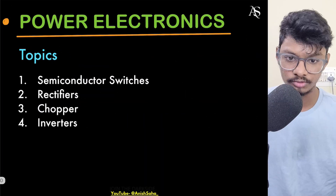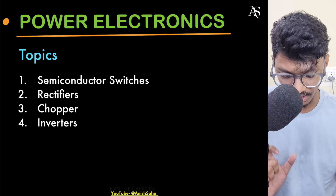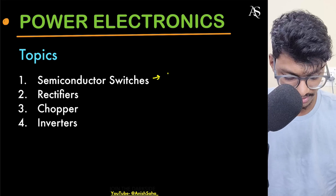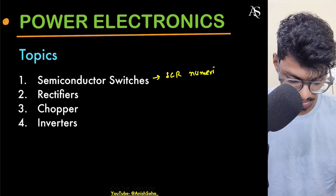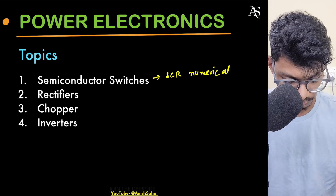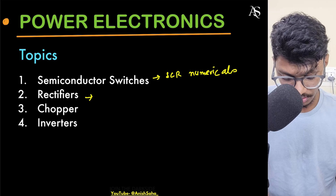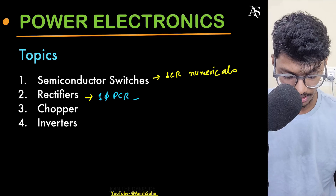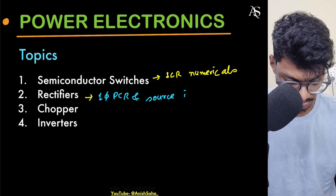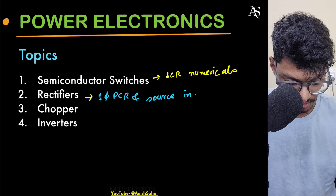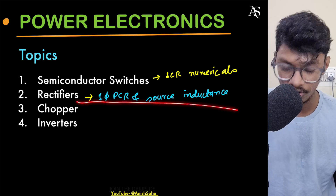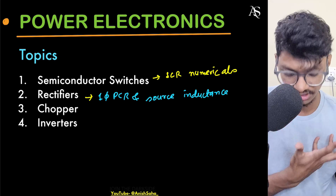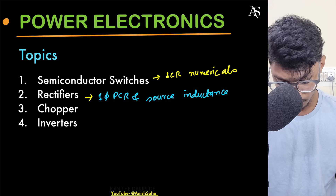Next is Power Electronics — again, everything is important. From semiconductor switches, there are a lot of theories but the most important portion is SCR numericals. Study the topics in the order given. Then cover rectifiers: study single-phase rectifiers completely. Three-phase rectifiers are sometimes difficult. Cover source inductance as well — single-phase controlled rectifiers with source inductance is the most important rectifier topic. Three-phase rectifiers can be skipped if they feel tough.